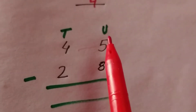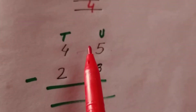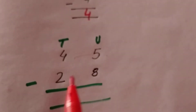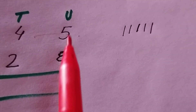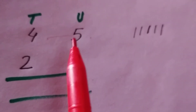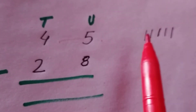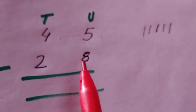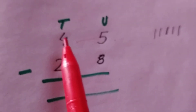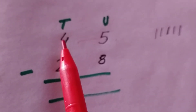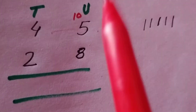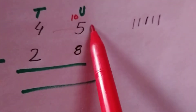Now there is a bigger value. Five and eight — one, two, three, four, five, six, seven, eight. Five is on the top. Five is smaller than eight, so we cannot subtract eight from five. So we borrow ten from the tens. Four gives us ten. Ten plus five becomes fifteen.